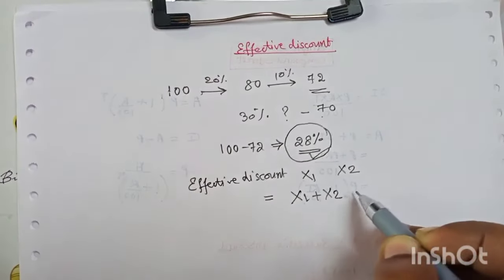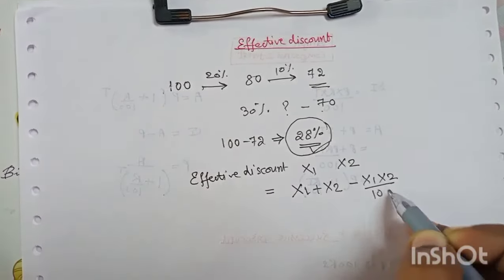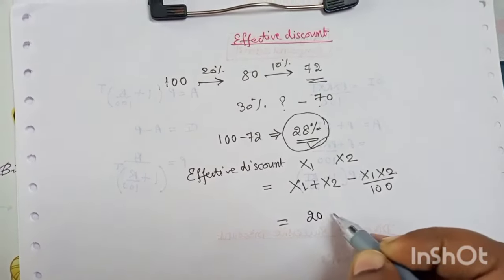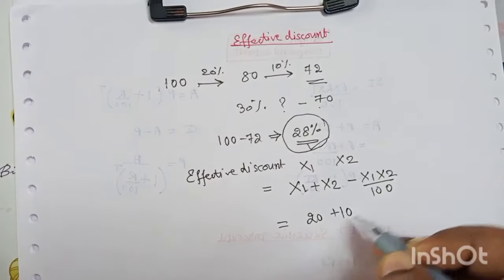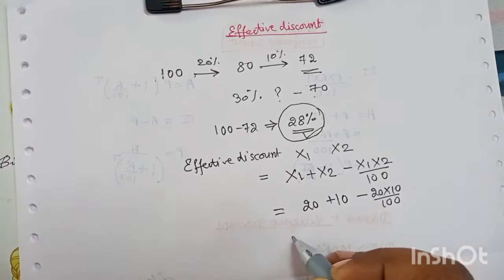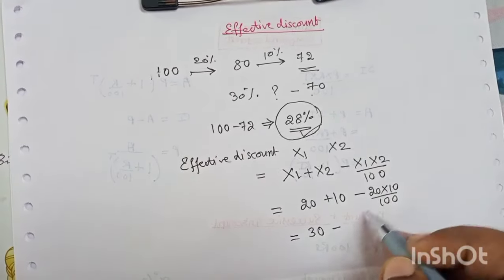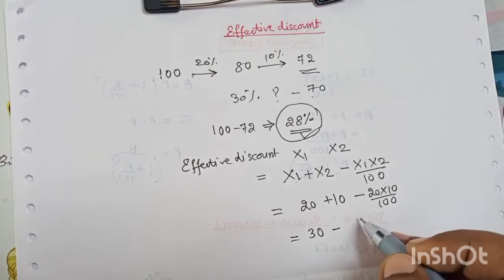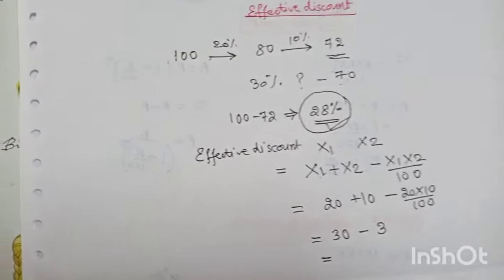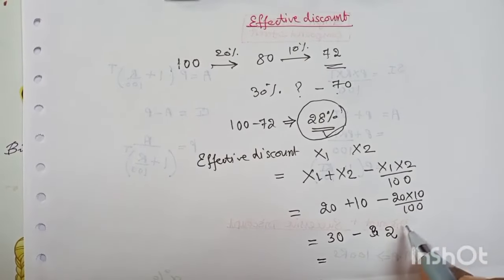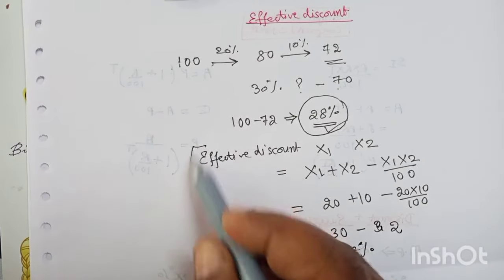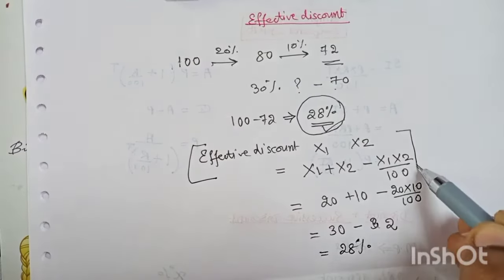The formula: if there are two discounts x1 and x2, then effective discount = x1 + x2 − (x1 × x2)/100. Applying this: first discount = 20%, second = 10%. Effective discount = 20 + 10 − (20 × 10)/100 = 30 − 200/100 = 30 − 2 = 28%. This confirms our earlier result. This is the formula for effective discount.